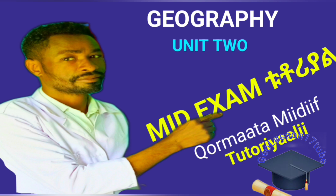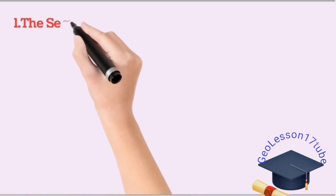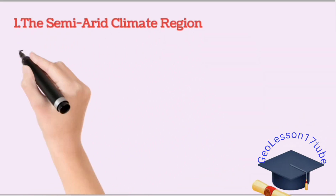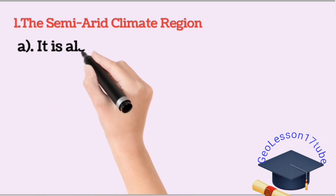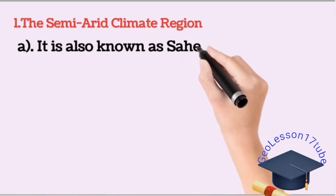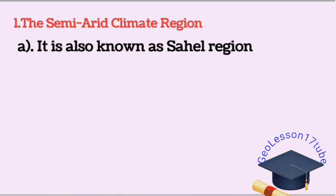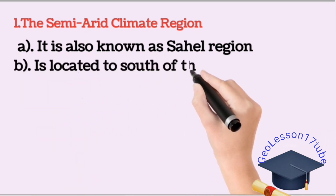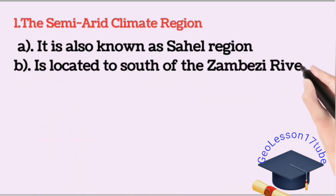The climate region. This region is also known as the Sahel region. This region is located to the south of the river Zambezi.